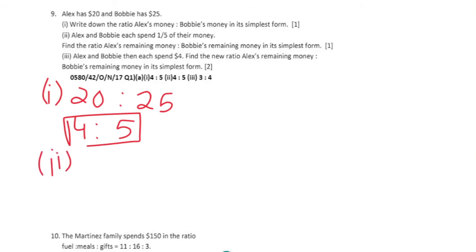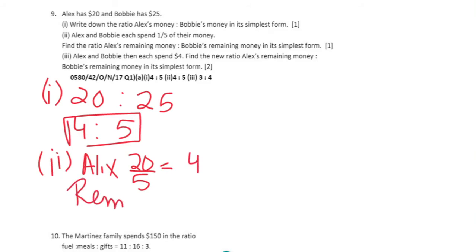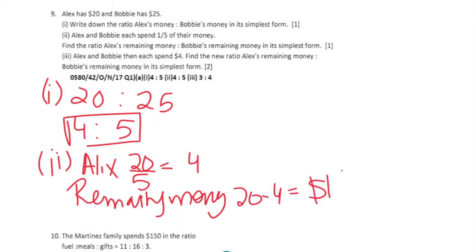Part 2: Alex and Bobby each spend one-fifth of their money. Alex spends 20 divided by 5, which is $4, so his remaining money is 20 minus 4, which is $16. Bobby spends one-fifth of 25, which is $5.